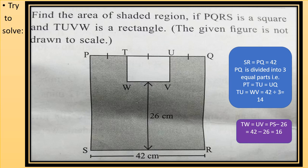Now to calculate the sides of the rectangle it is given that PQ is divided into 3 equal parts. So that is PT equals to TU equals to UQ. So we have to calculate TU the side of the rectangle. So TU will be 1 third part of PQ. So PQ is 42. So TU will be 42 divided by 3 equals to 14.